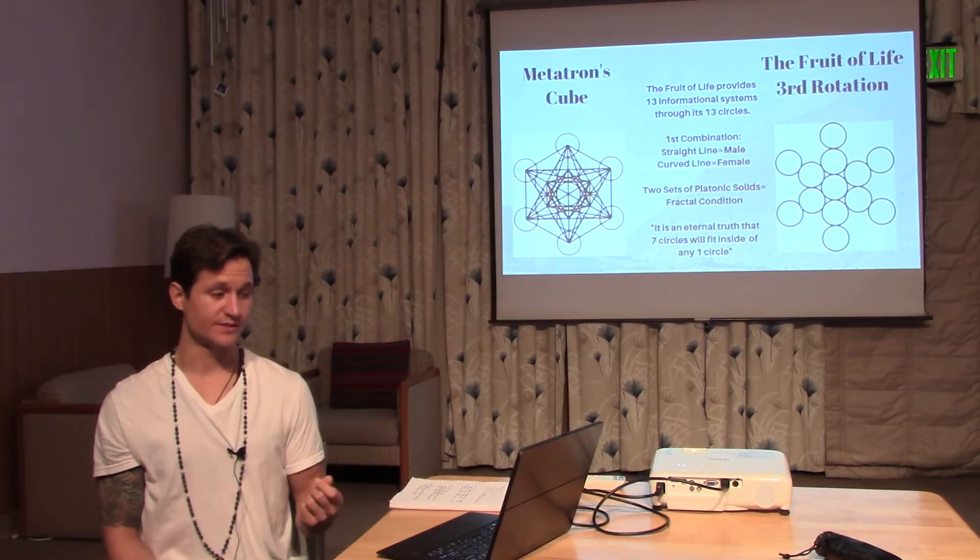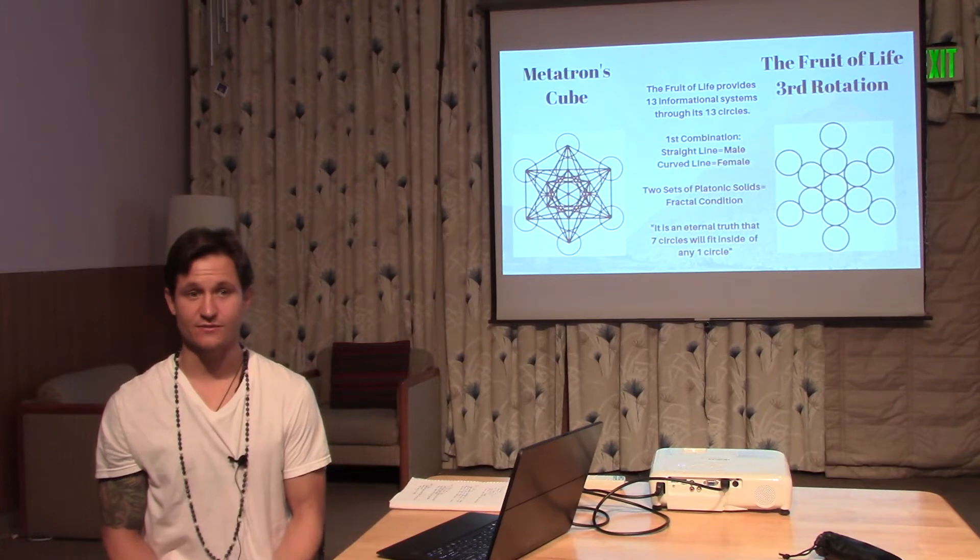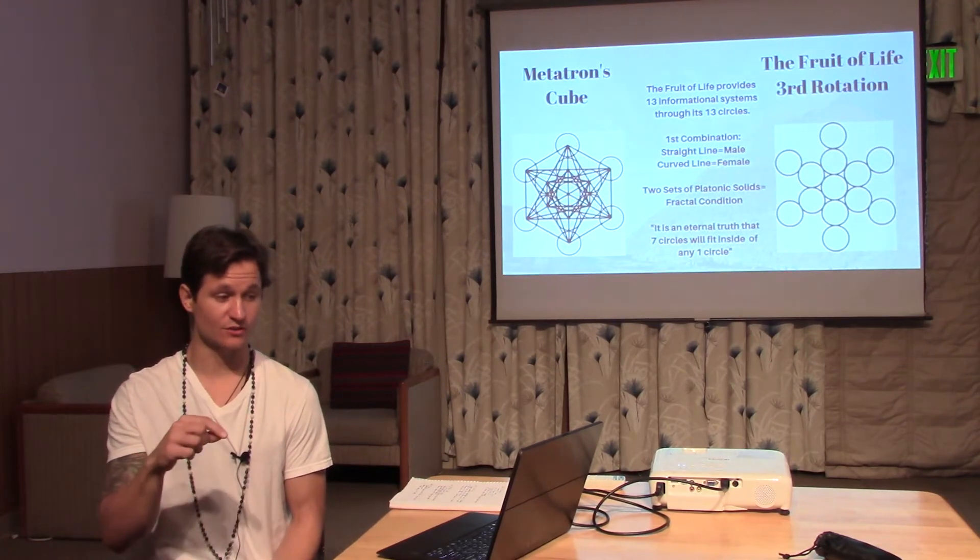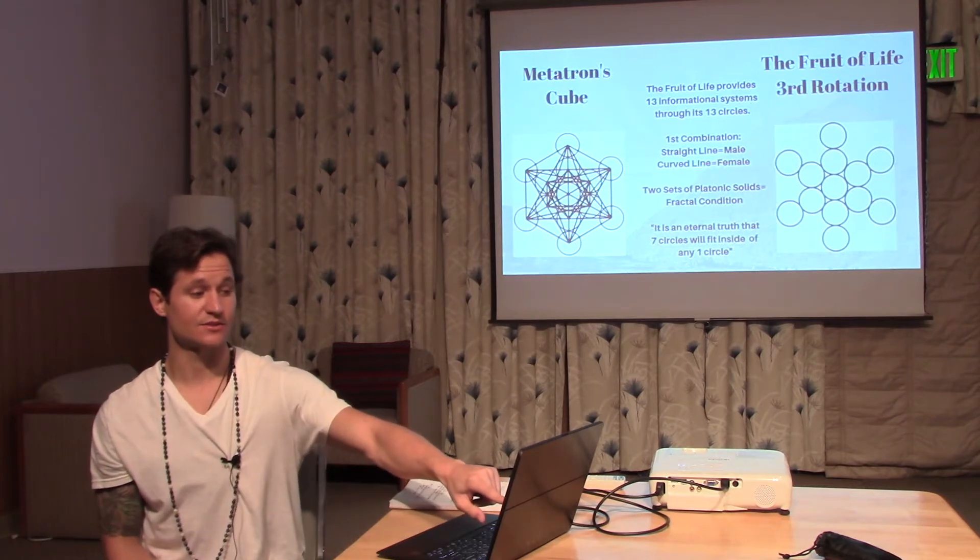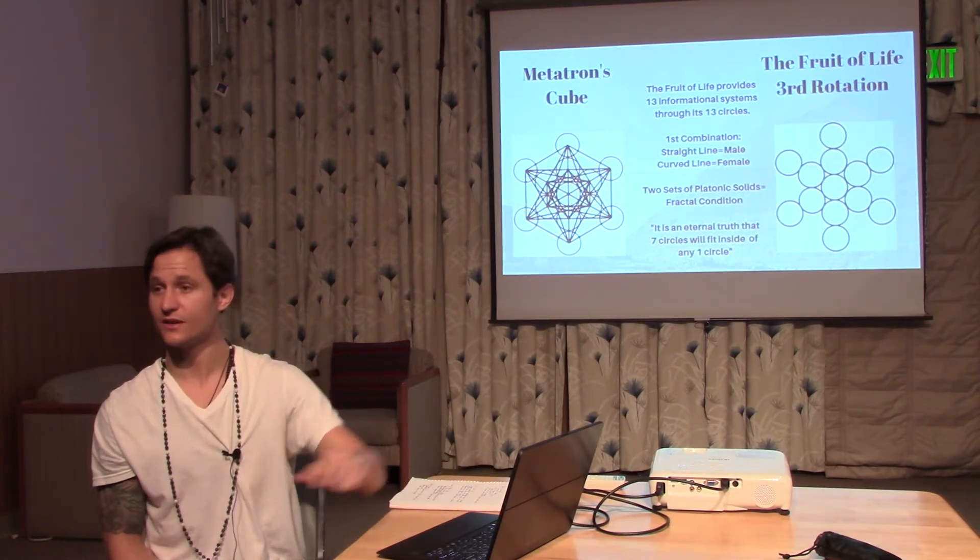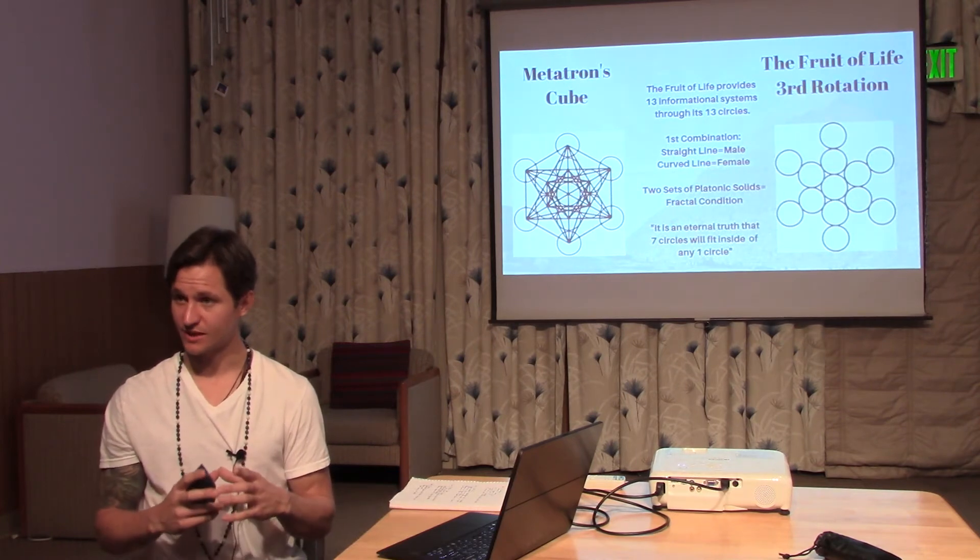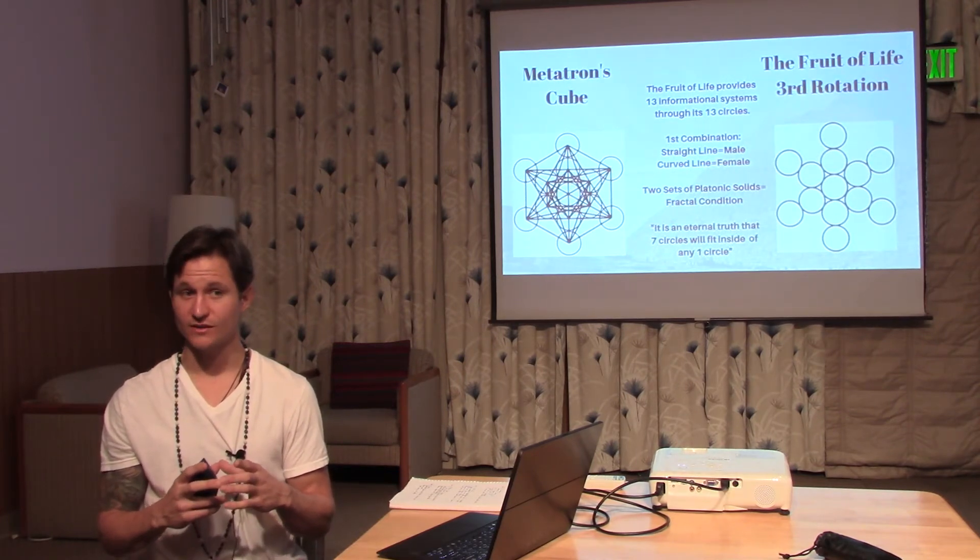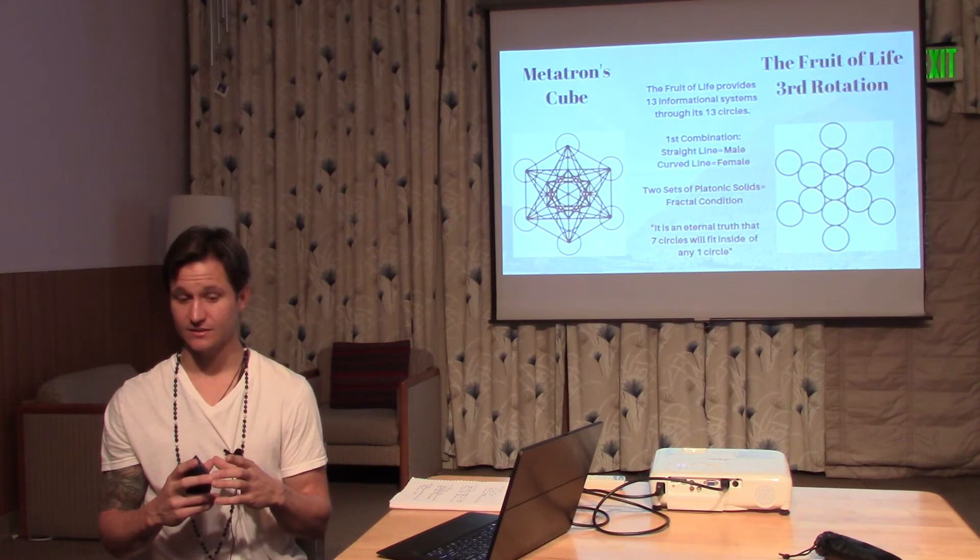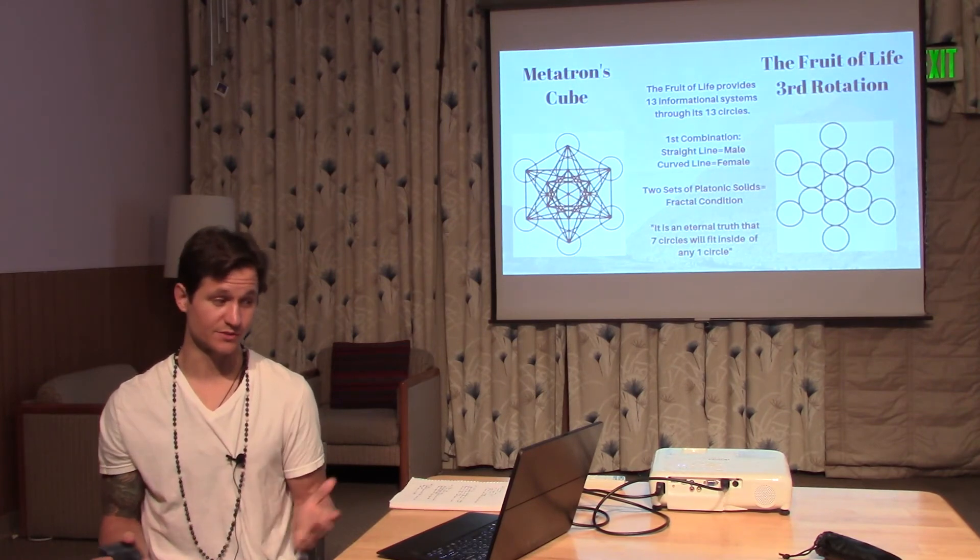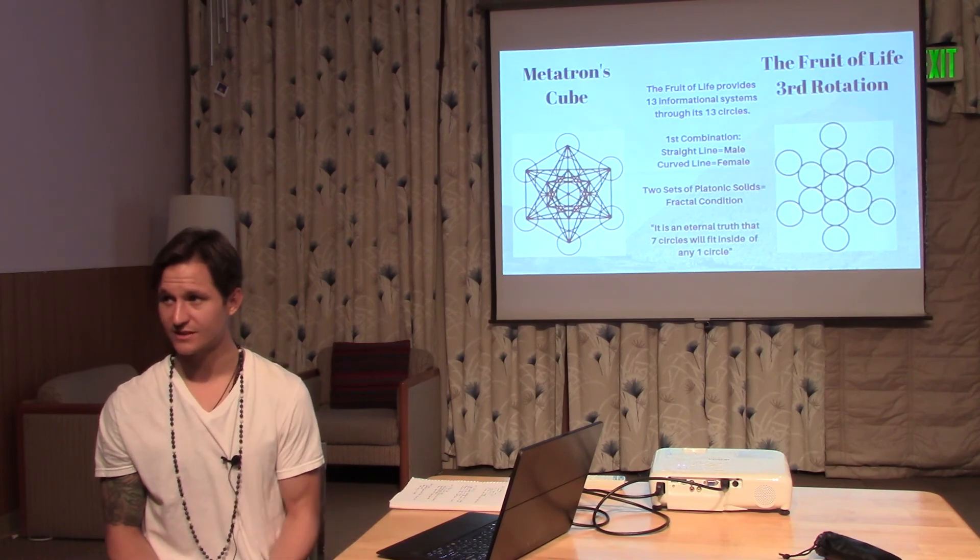Drunvolo writes this, but it is an eternal truth that seven circles will fit inside of any circle. If you draw a circle, you can fit the center seven circles of the fruit of life, and that will give you one set of platonic solids. Once you have one set, you can create a set on top and within it. This is what he was looking for, but all our ancient cultures had this information.